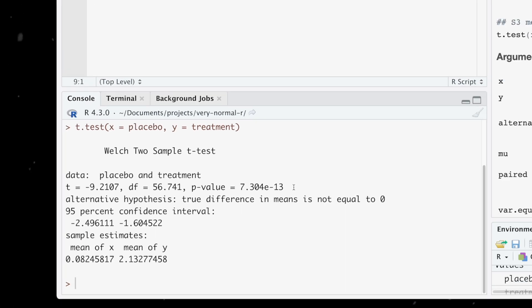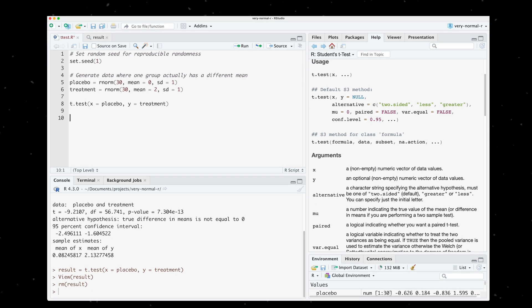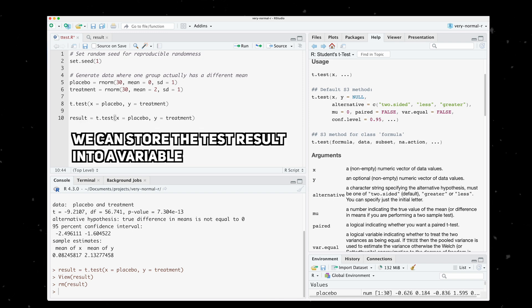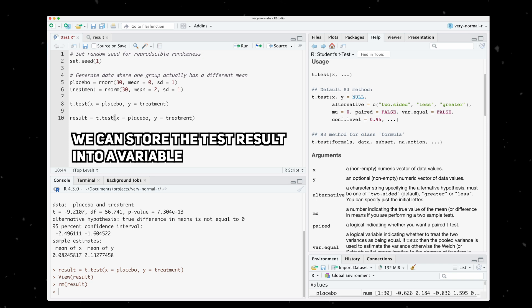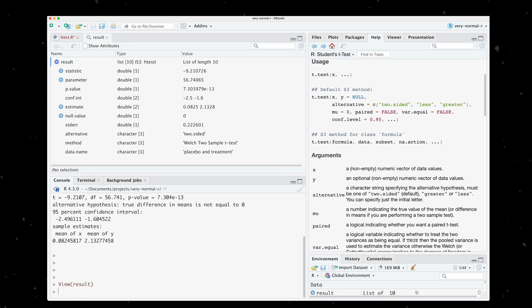Lots of functions in R give helpful output like this, but we might want to use some of this information in a report. Instead of just running the test and memorizing all of this information, you can actually store the output of a t-test function into a variable. Because a t-test encompasses lots of different types of information, it's stored in a list. We can inspect this variable in more detail by clicking on it.